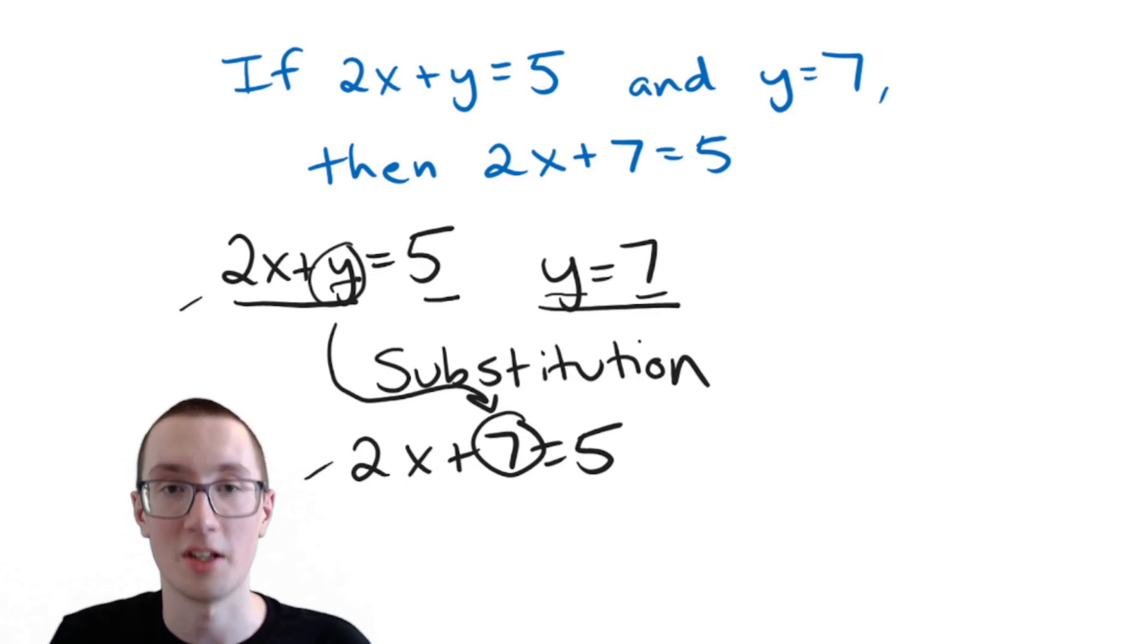all we've done is we've replaced Y with seven. And our second equation says that Y equals seven. So what we've done is we've substituted Y with seven. So therefore, we have the substitution property in this equation. Just the substitution property, nothing else. There's no tricks here. So that's it for our properties of equality.